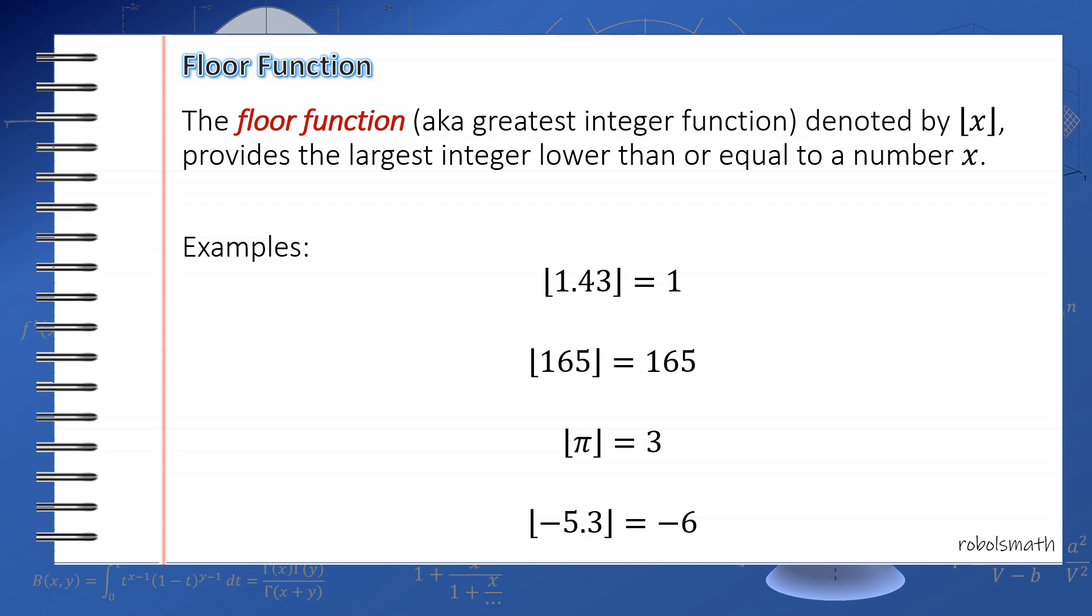Among them, the floor function of a negative number is often the most confusing. If you get the floor of negative 5.3, that's not negative 5, that's negative 6. Because negative 6 is the largest integer lower than negative 5.3. Negative 5 is larger than negative 5.3, so we don't take that.